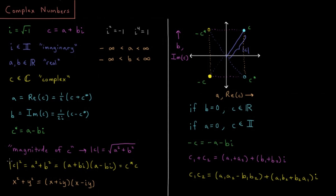The square of a complex number's magnitude equals a-squared plus b-squared. From algebra, we can factor this as a plus bi times a minus bi, which equals c times its complex conjugate c*. So the square magnitude of a number equals itself times its complex conjugate. This comes up in quantum mechanics a lot, where we often have some function times its complex conjugate. In general, x-squared plus y-squared equals x plus iy times x minus iy.